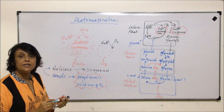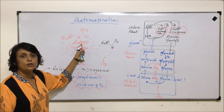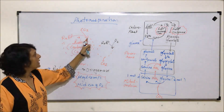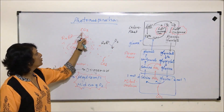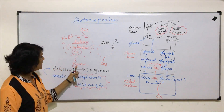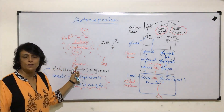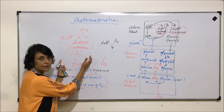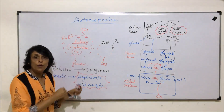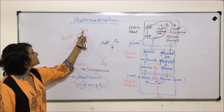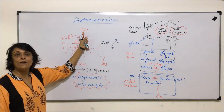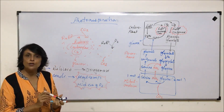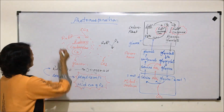In the C3 cycle, Rubisco acts as carboxylase — RuBP binds with carbon dioxide, glucose is synthesized, and this is part of photosynthesis. So during photosynthesis, carbon dioxide is taken in and oxygen is given out.